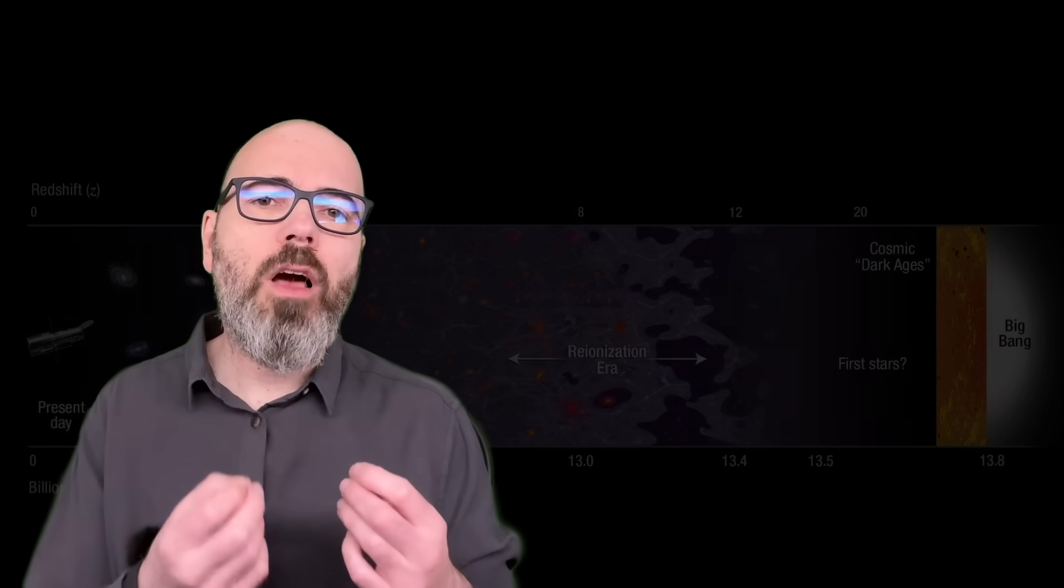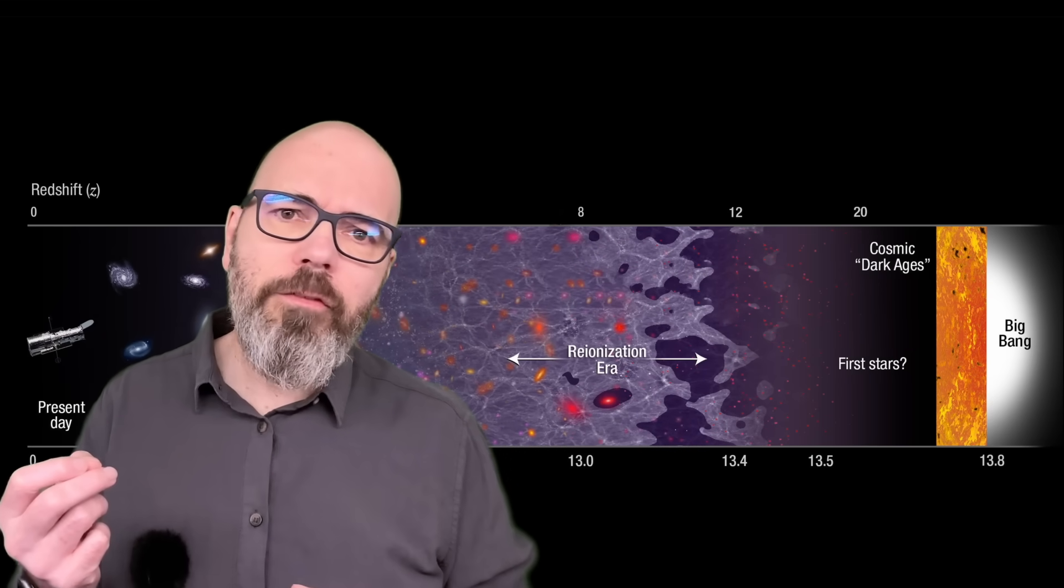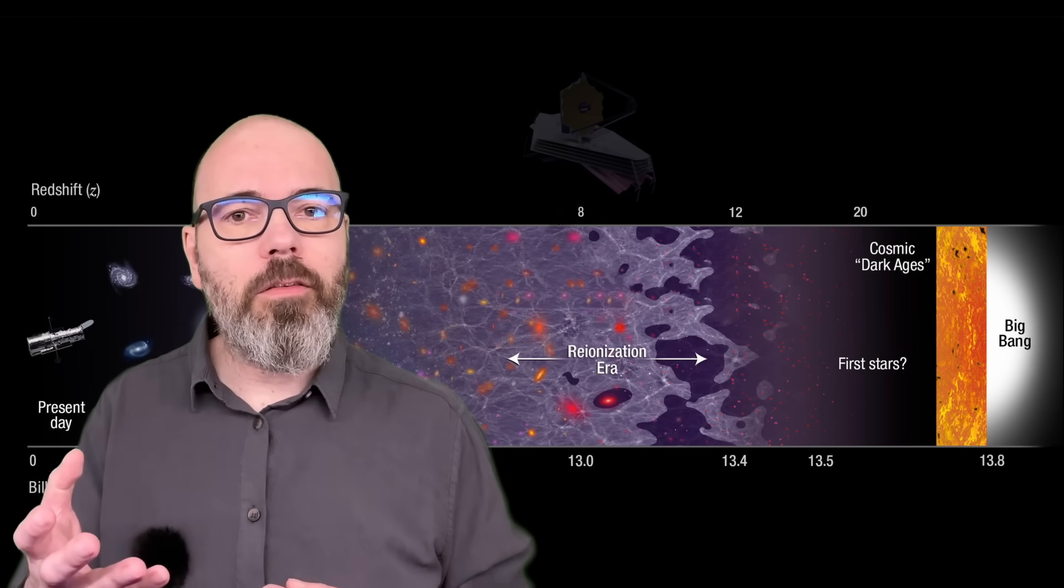The early universe was supposed to be dark and simple, filled with neutral hydrogen, maybe lit by the very first stars, but certainly not galaxies.